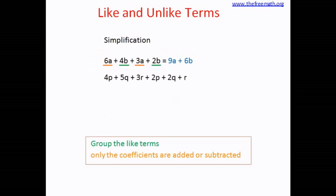Let's look at another example. Now here you can see three different variables. So let's group the like terms here. 4p plus 2p gives 6p. 5q plus 2q gives 7q. And 3r plus r. r means 1r. So 3r plus 1r gives 4r. So the simplified expression is 6p plus 7q plus 4r.